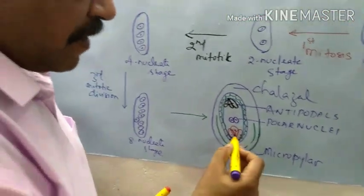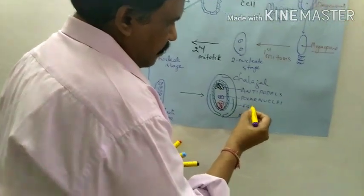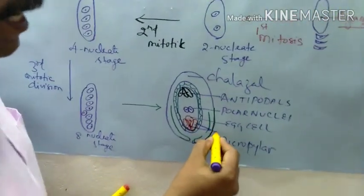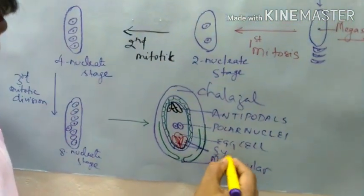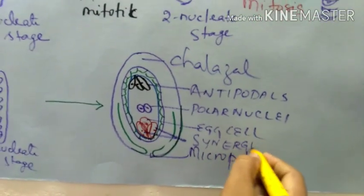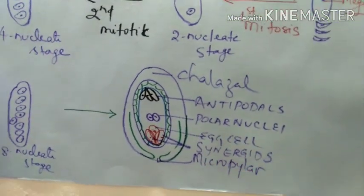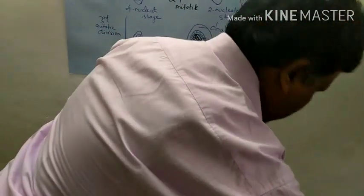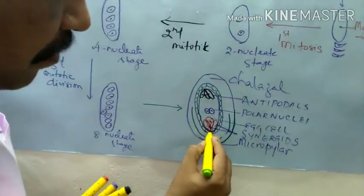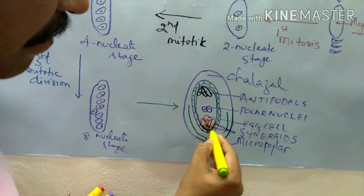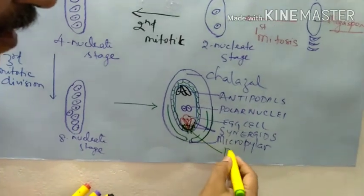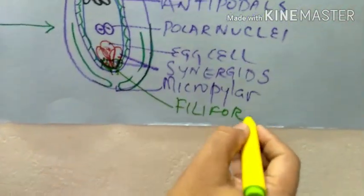The whole thing is called the egg apparatus. The central one is called the egg cell — that is what is the female gamete. And these two cells which are actually flanking it are called as synergids. Near the synergids you will also find some structures supporting that — finger-like projections. This is called as filiform apparatus.